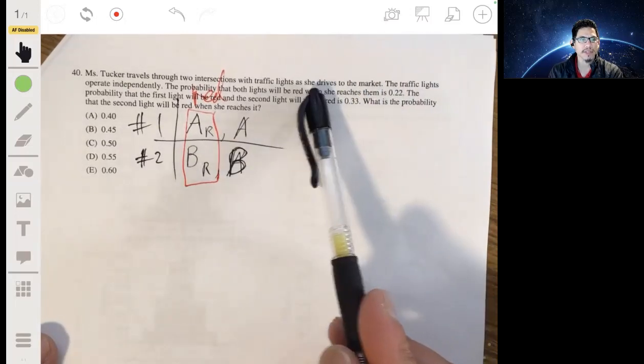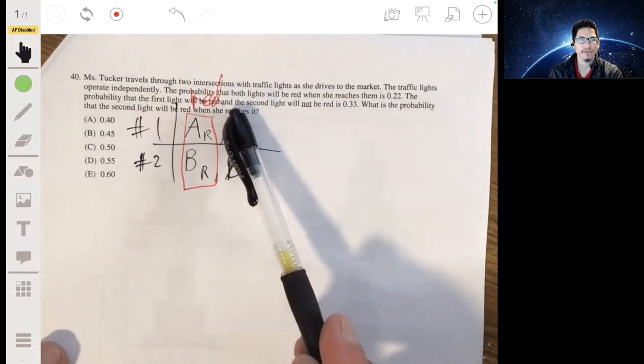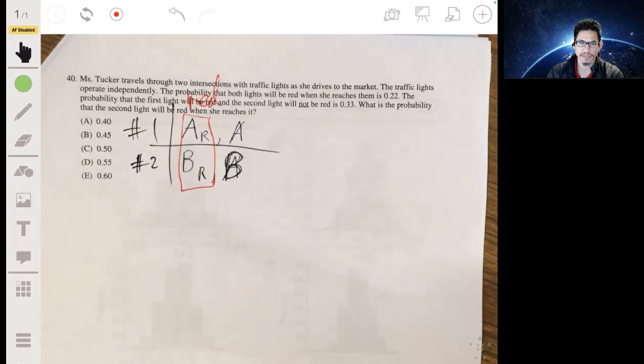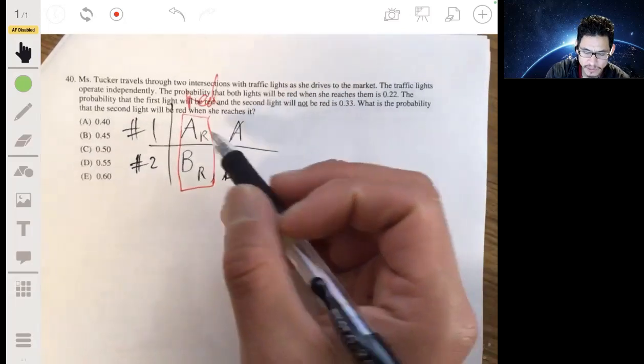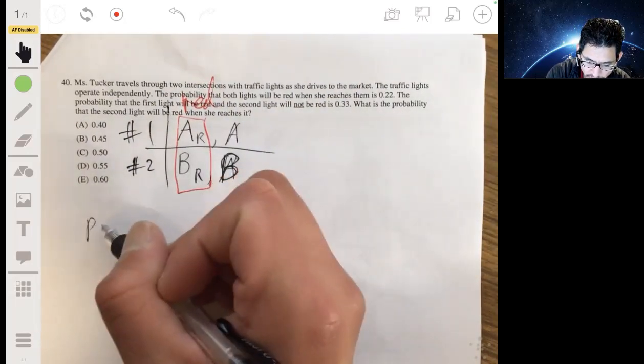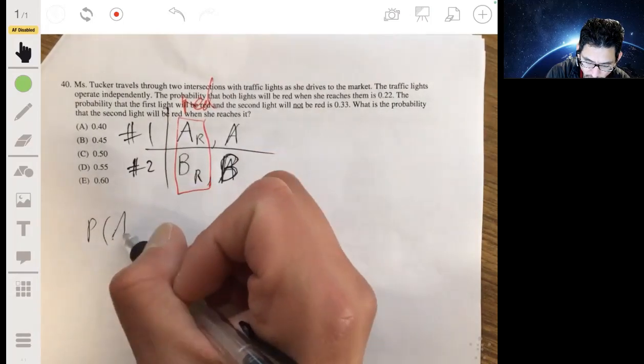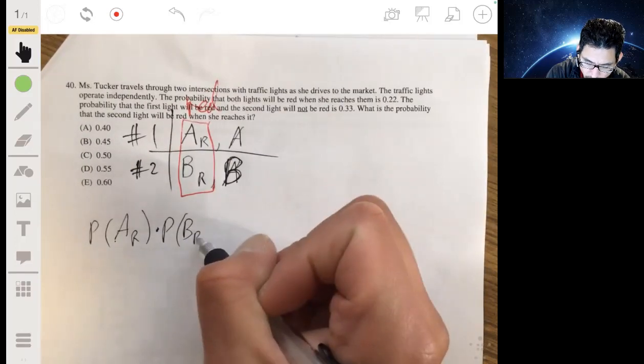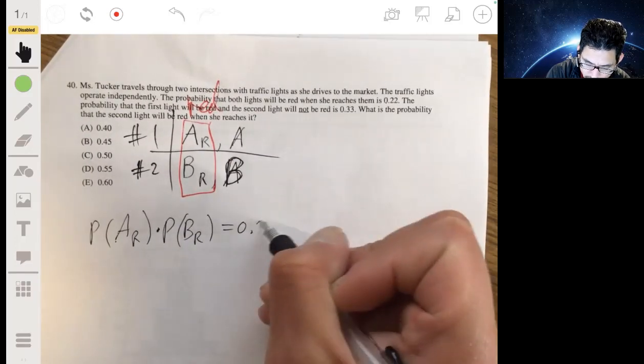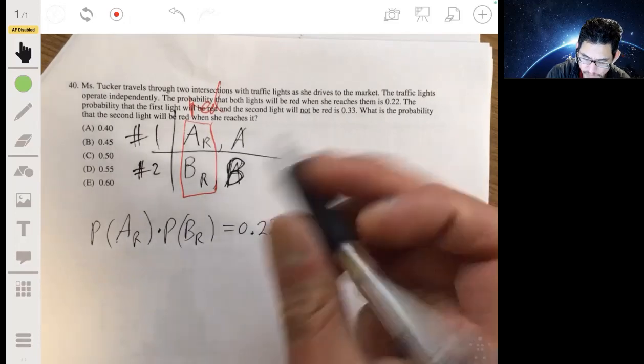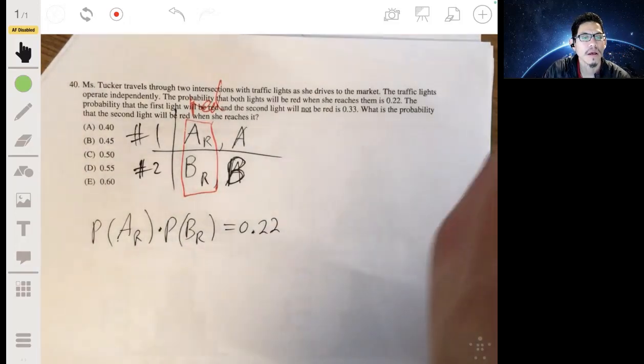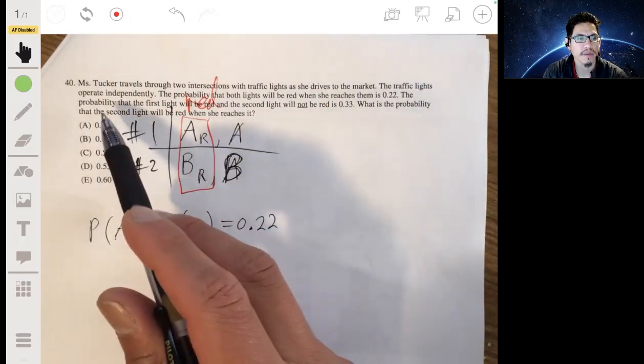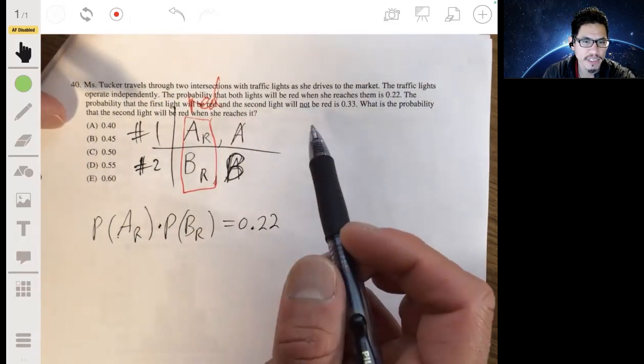Okay, so then we're told that they're independent, and we're told the probability that both lights will be red when she reaches them is 0.22. So that means we can multiply their probabilities. The probability of the first light being red, or AR, times the probability of BR is equal to 0.22.